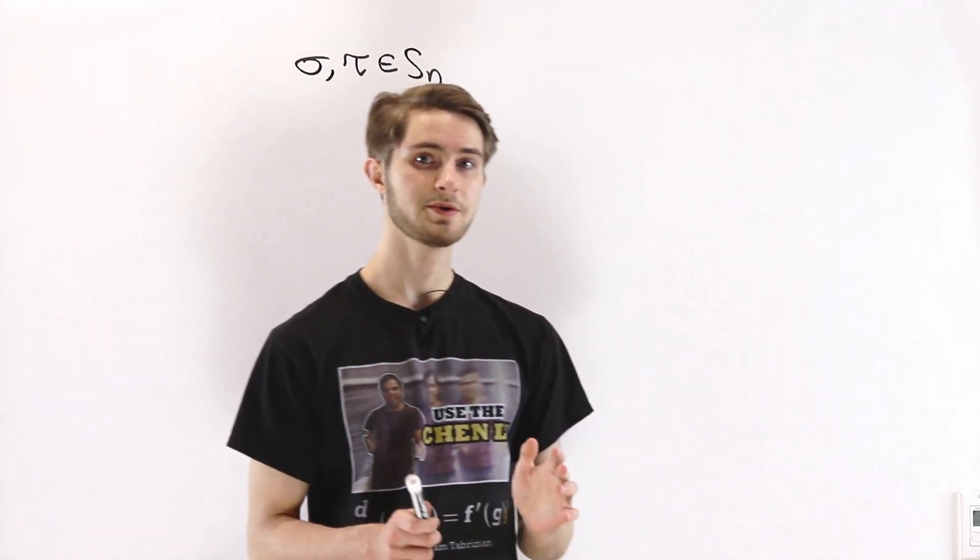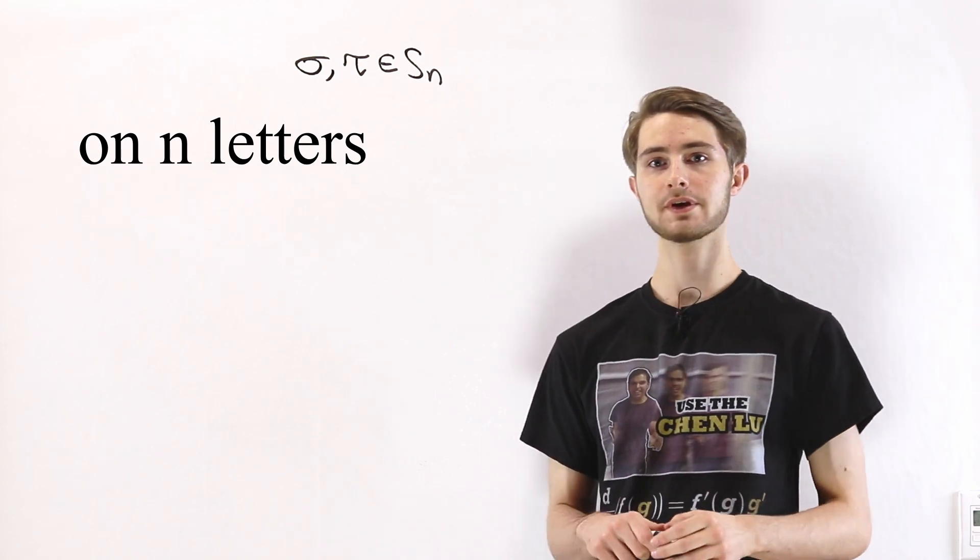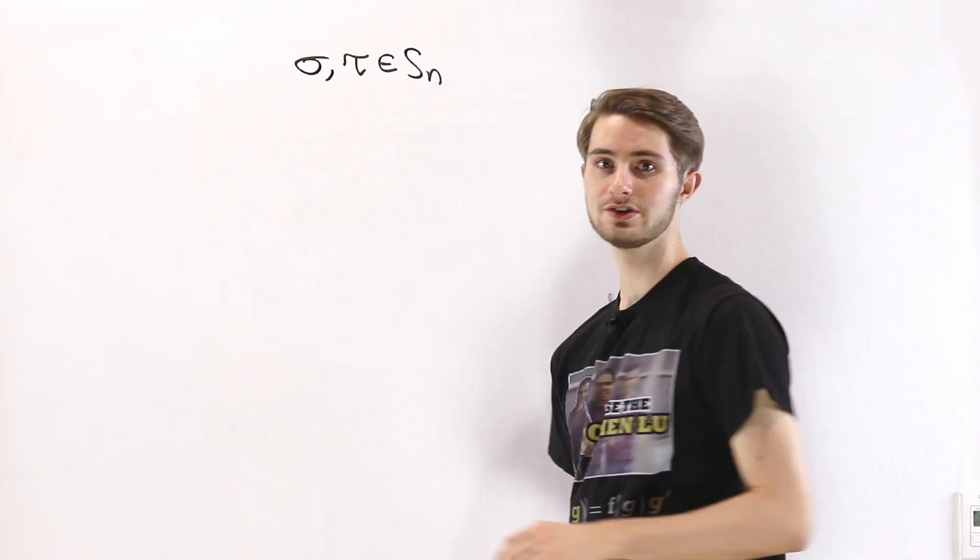So we are going to learn about some properties of conjugation in the symmetric group. Let's suppose that we have two elements, sigma and tau, which are permutations in Sn.